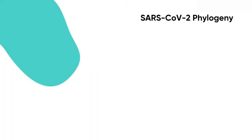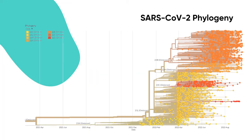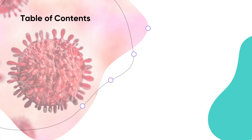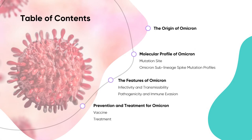On November 24, 2021, South Africa registered a new variant with the WHO that has shown higher contagiosity than the previous variants. The WHO classified it as a variant of concern on November 26, 2021, and named it the Omicron variant. Today we will briefly introduce Omicron, a variant of SARS-CoV-2, covering the following aspects in this presentation.